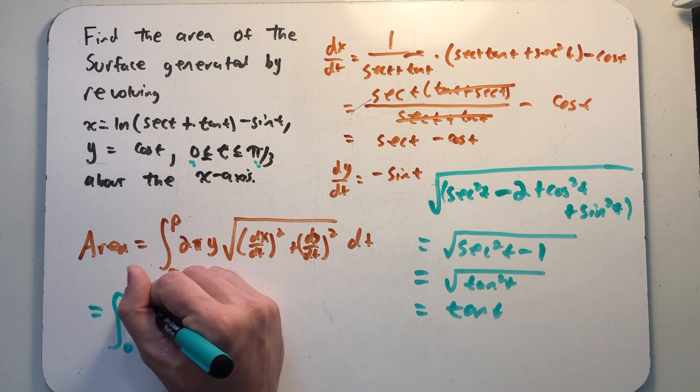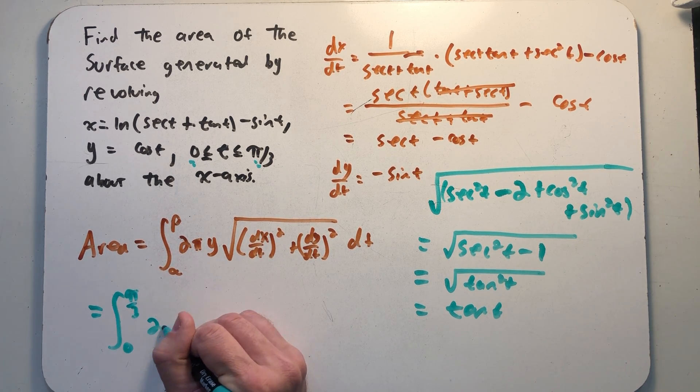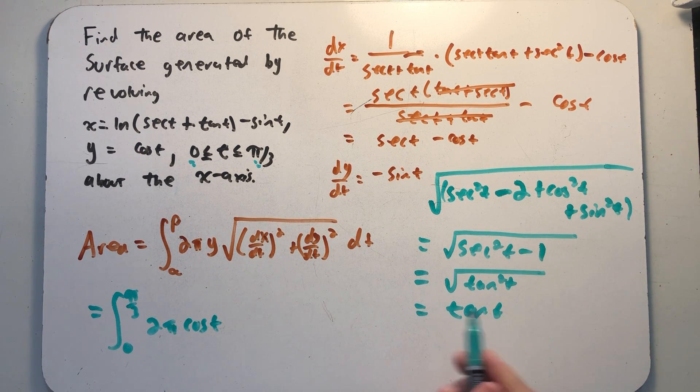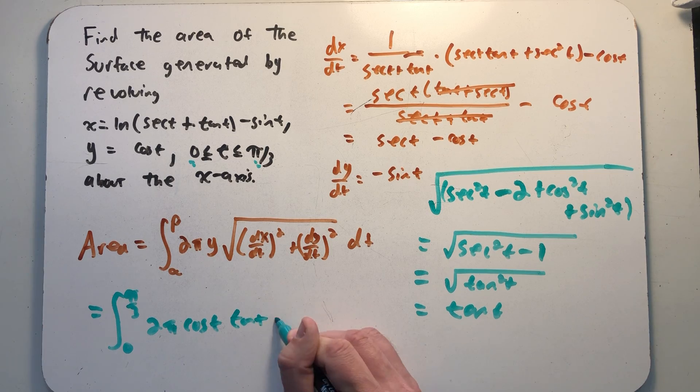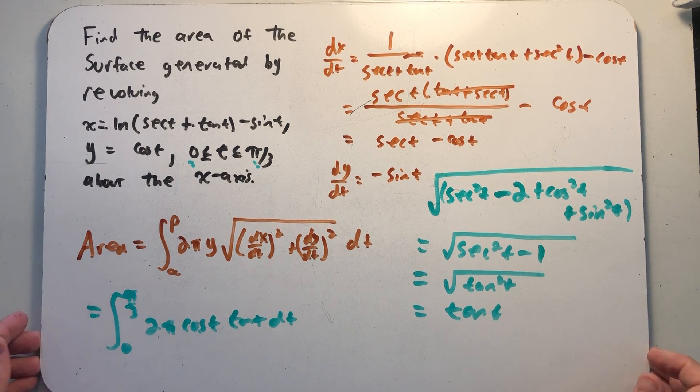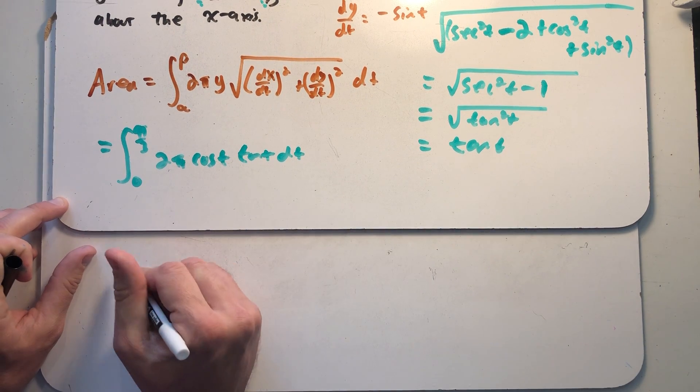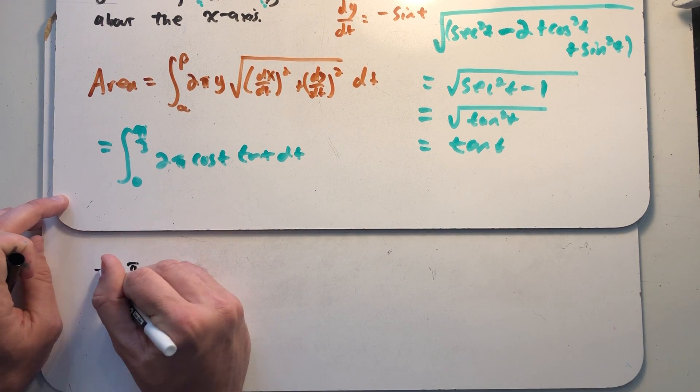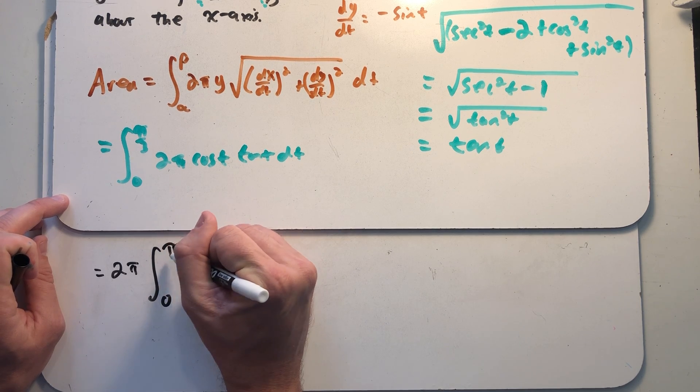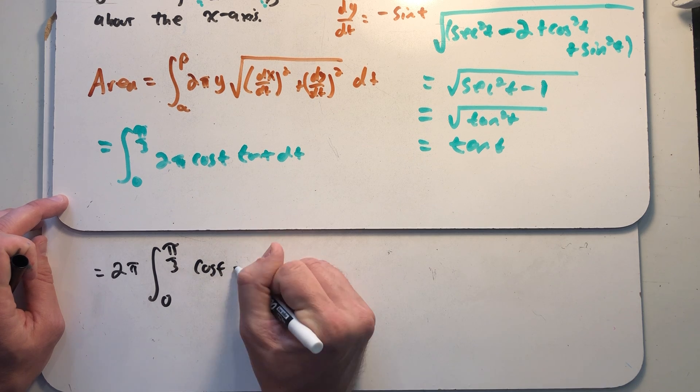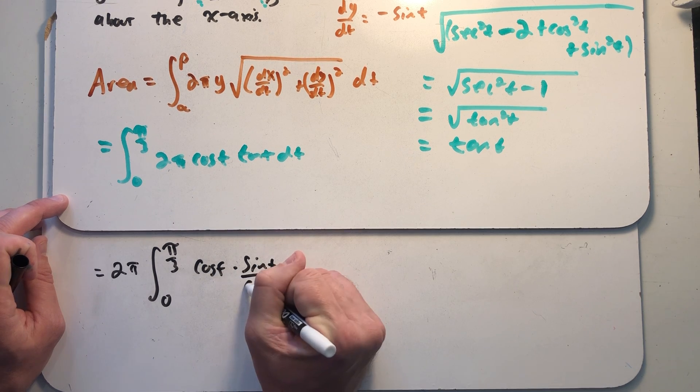We have an integral from zero to pi over three of two times pi times y cosine of t times tangent t dt. If I think about that, I could pull the two pi out front, still have an integral from zero to pi over three. Cosine times tangent, well, that's cosine times sine over cosine.